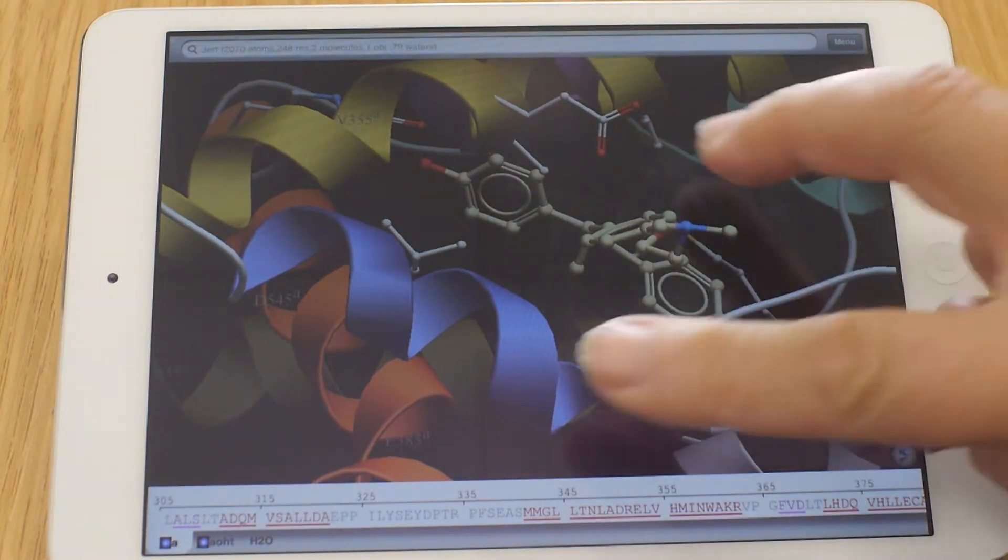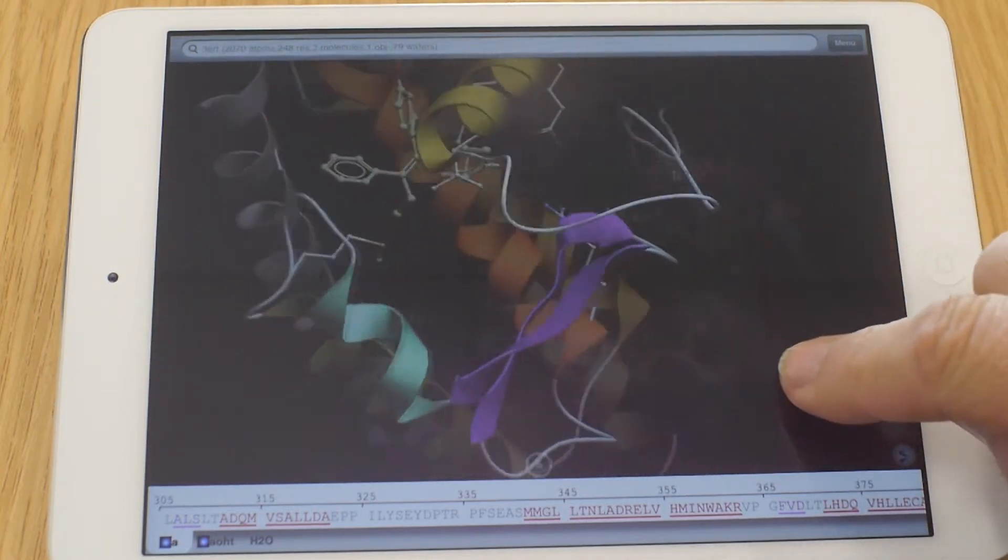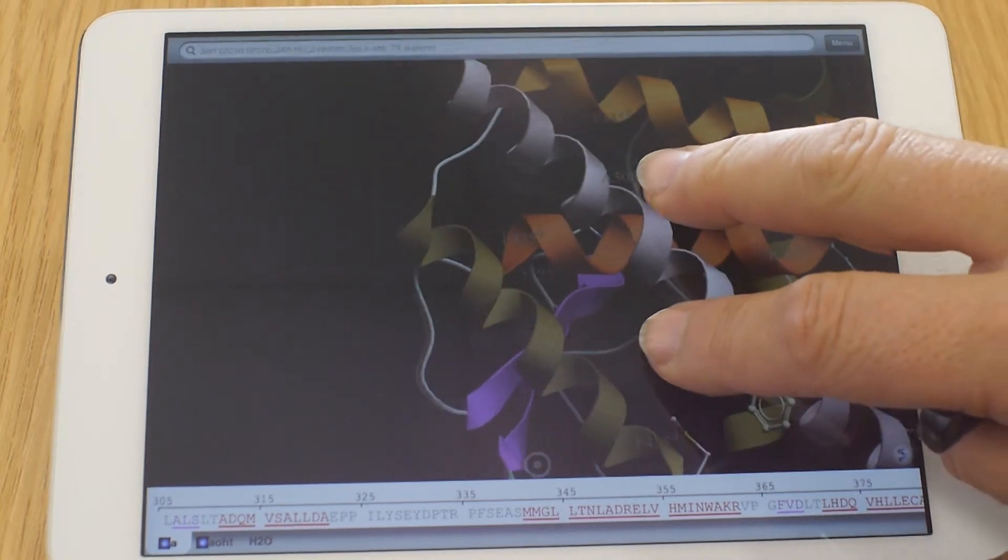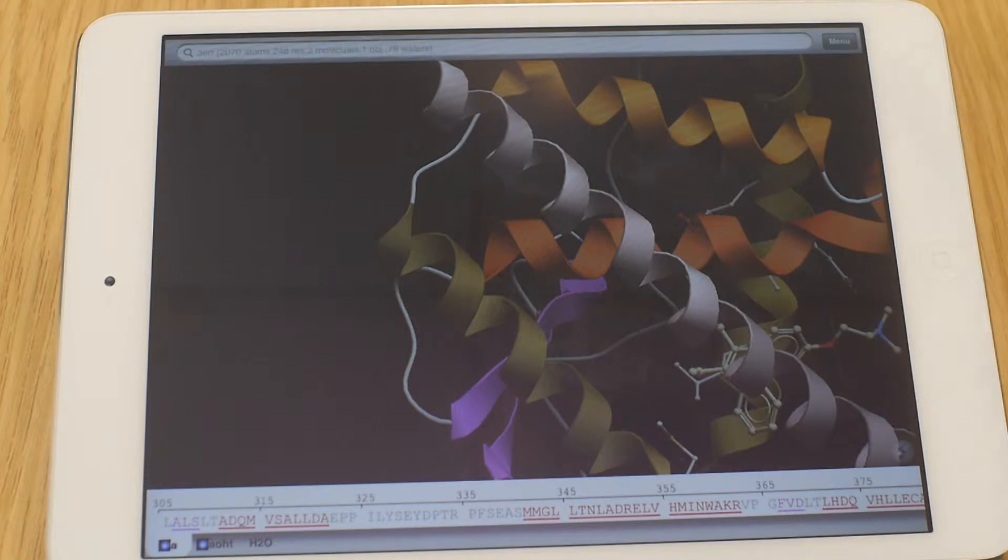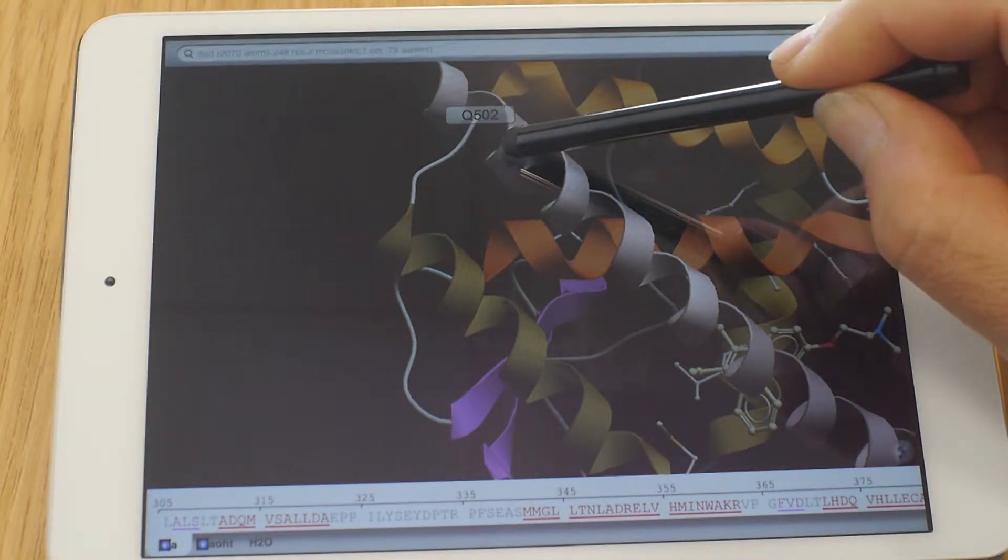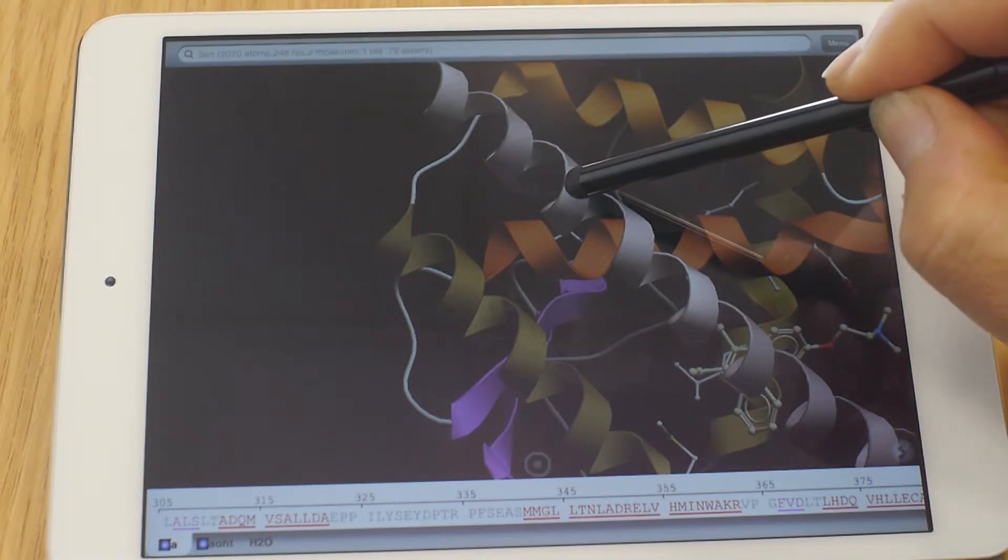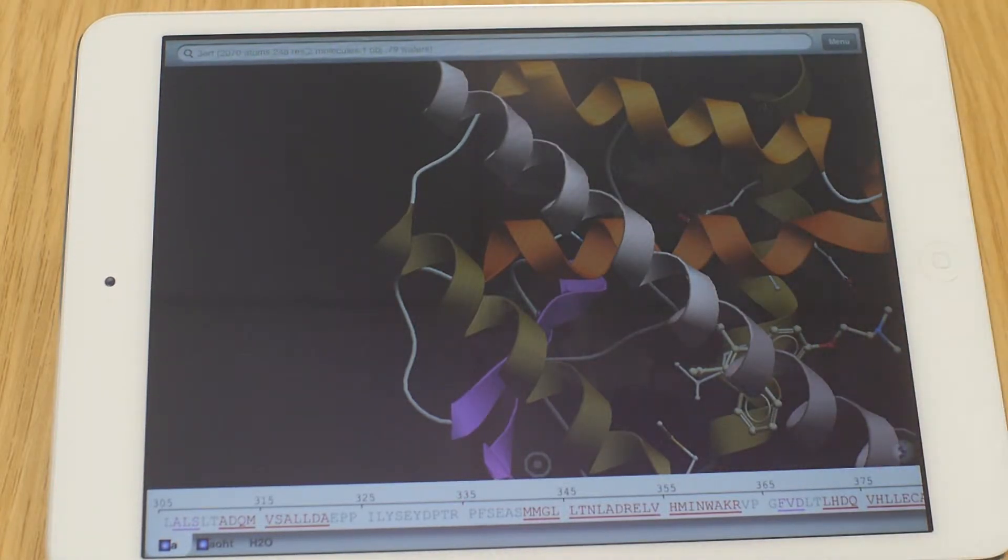We can label the residues. That might be helpful if you're lost. If you don't know where you are in the protein. But there's also another way to label the residues. Go back in the menu. And get rid of the residues. All you have to do is click on one residue and hold it clicked. And then it pops up. Yes, this is alanine 505 in this case. So if you don't know where you are in the molecule, click on it, hold it for a couple of seconds, and it shows you where you are.